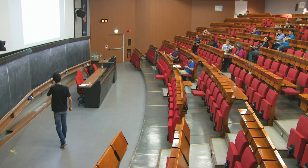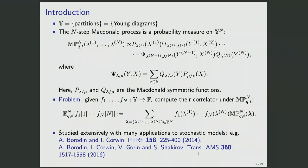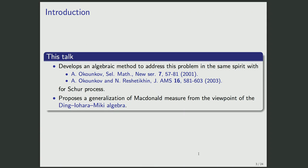This problem is a very classical subject. There are many preceding works treating many applications to actual stochastic models. Today, my point is a rather formal one: I try to develop a purely algebraic method to compute a correlator, in the same spirit as the work by Okounkov and Okounkov–Sheth–Him for the Schur process.